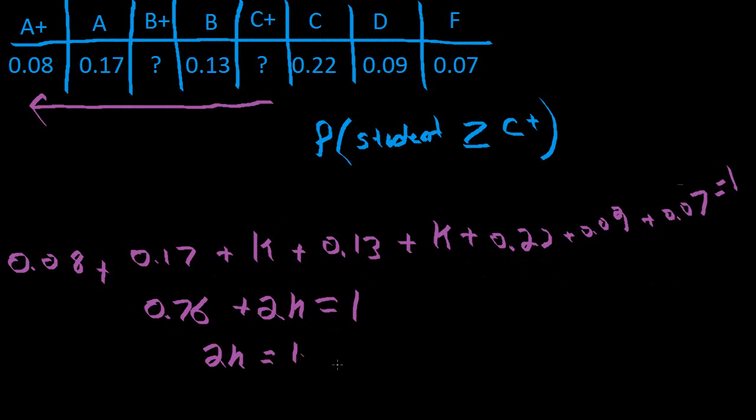Now we just do some algebra and get 2K is equal to 1 subtract 0.76, or rather 2K is going to be equal to 0.24. Then we divide by 2 to get a K value, divide this by 2, and we get a K value equal to 0.12.